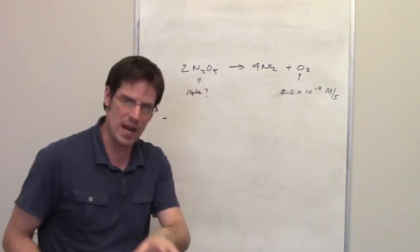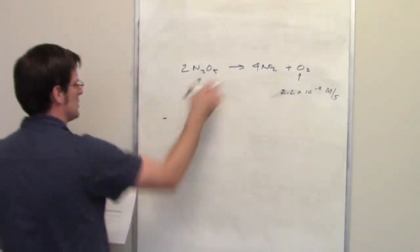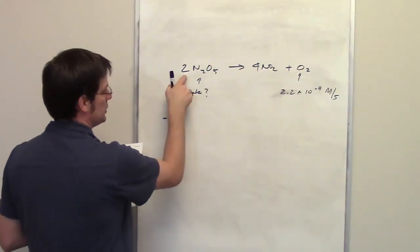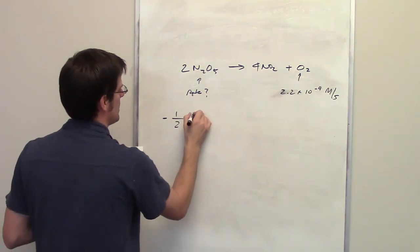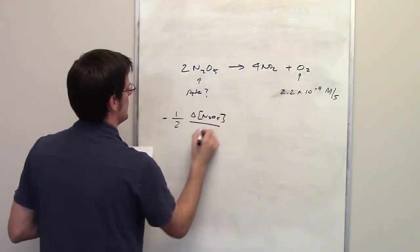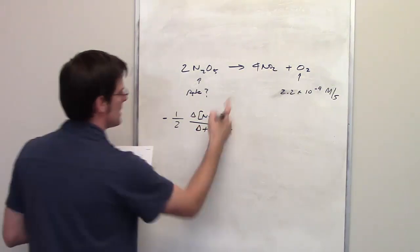The relative rate law equation for each of these components is 1 divided by the coefficient, in this case 2, multiplied by the change in concentration of N2O5 divided by delta t is going to be equal to 1 divided by the coefficient of 4 multiplied by the change in the concentration of NO2 divided by delta t.